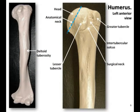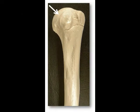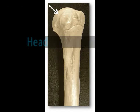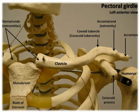Let's take a look at the bony landmarks at the proximal end of the humerus. This is the head, the rounded portion that articulates with the glenoid cavity of the scapula to form the shoulder joint, also known as the glenohumeral joint.